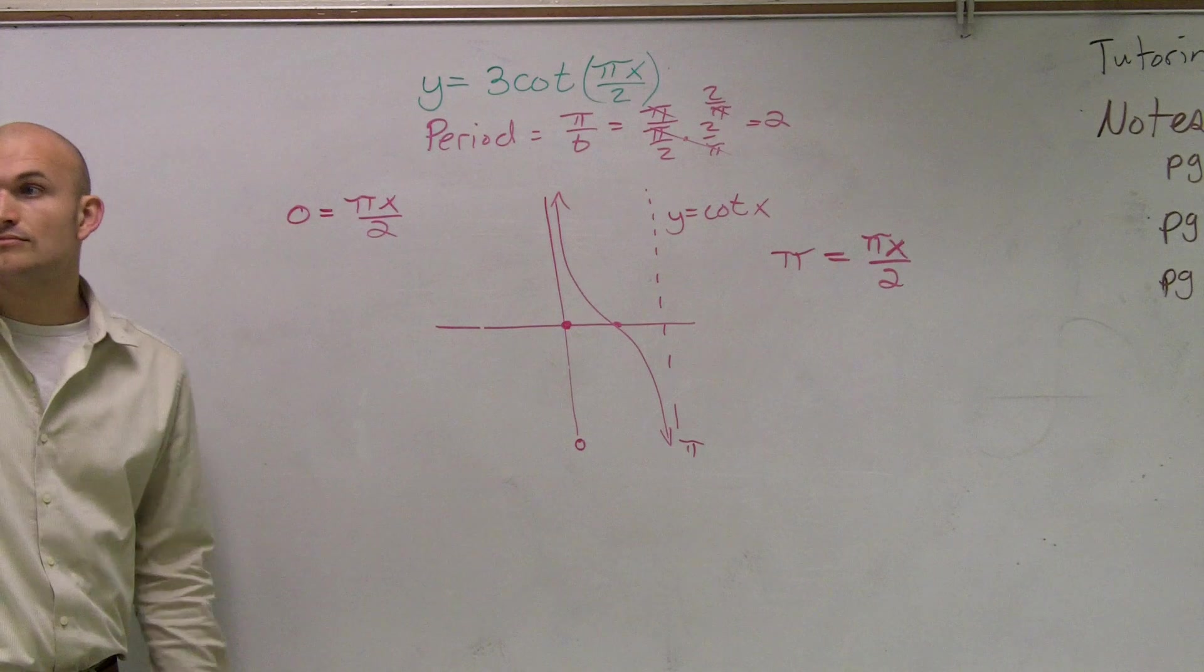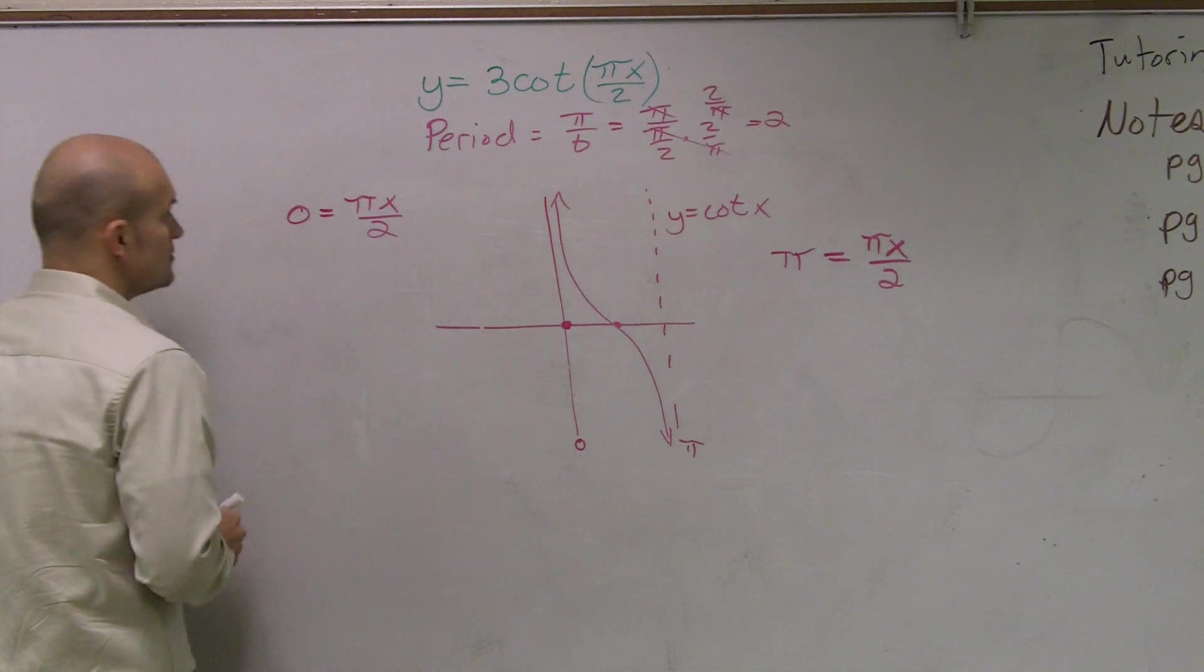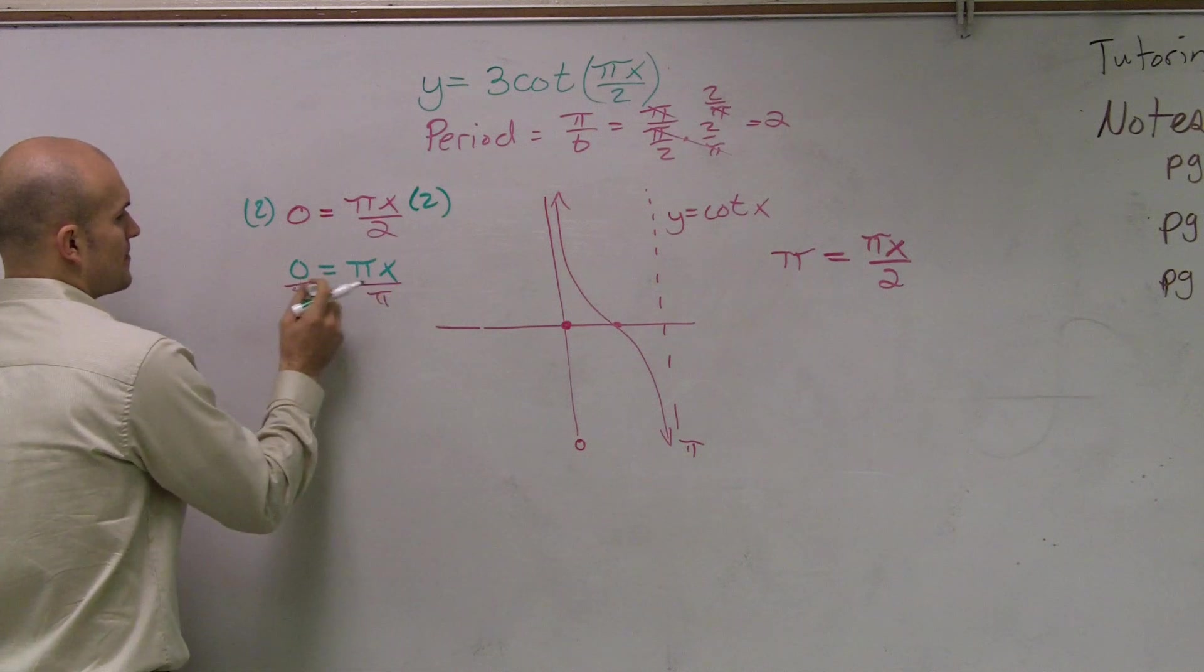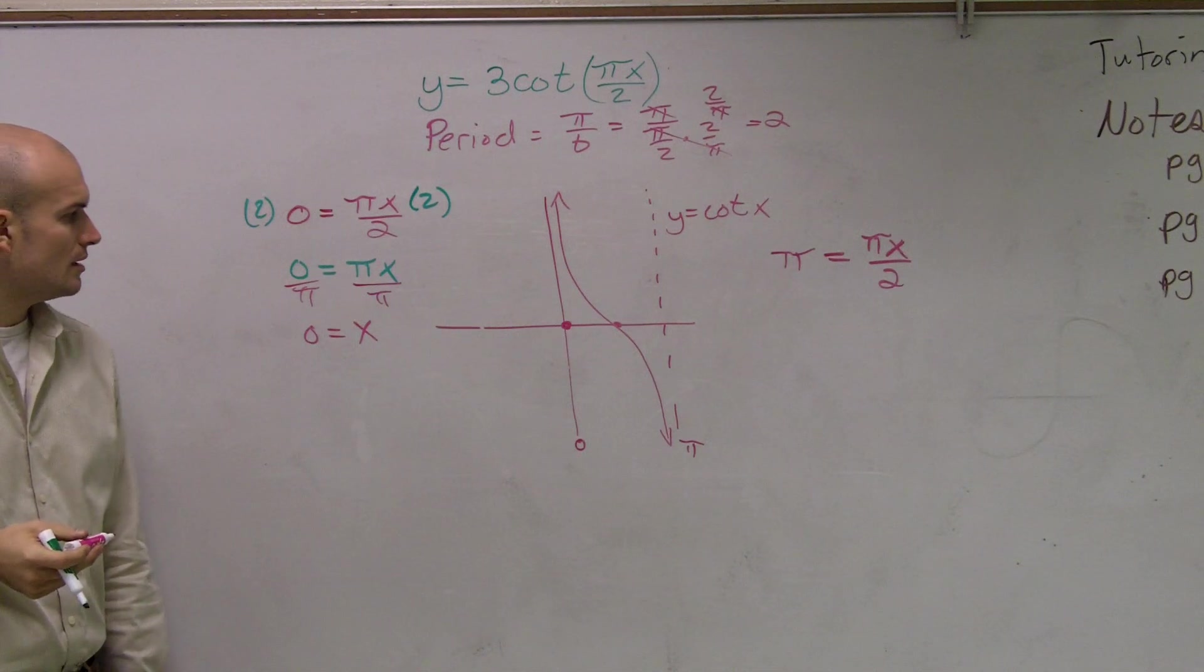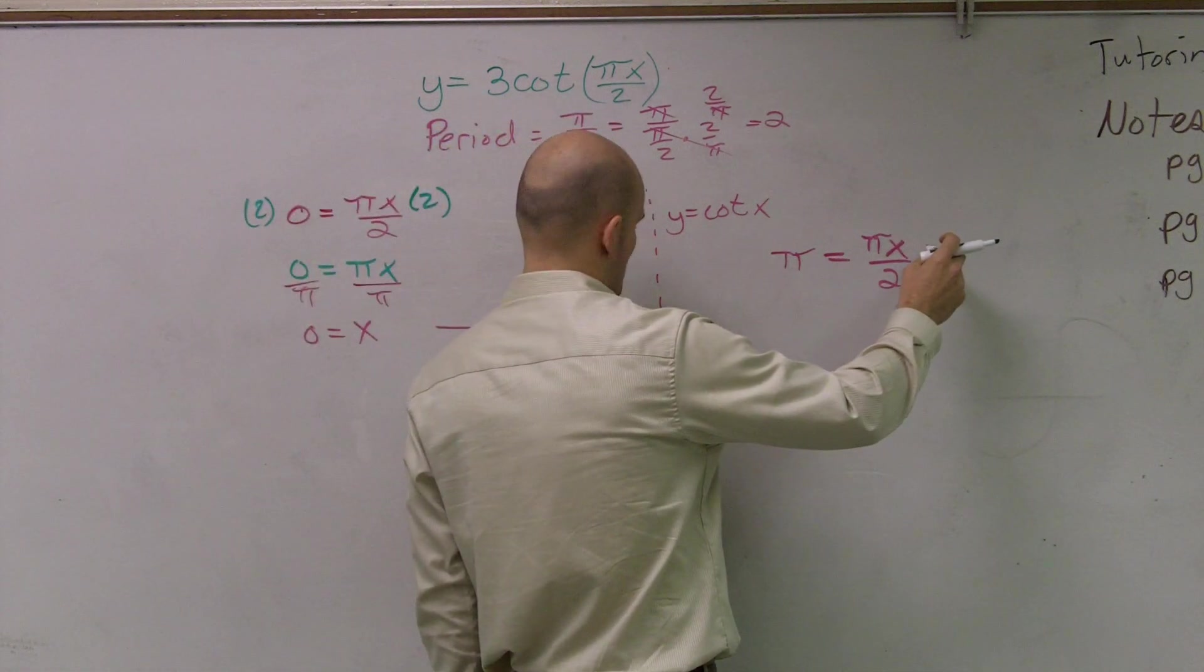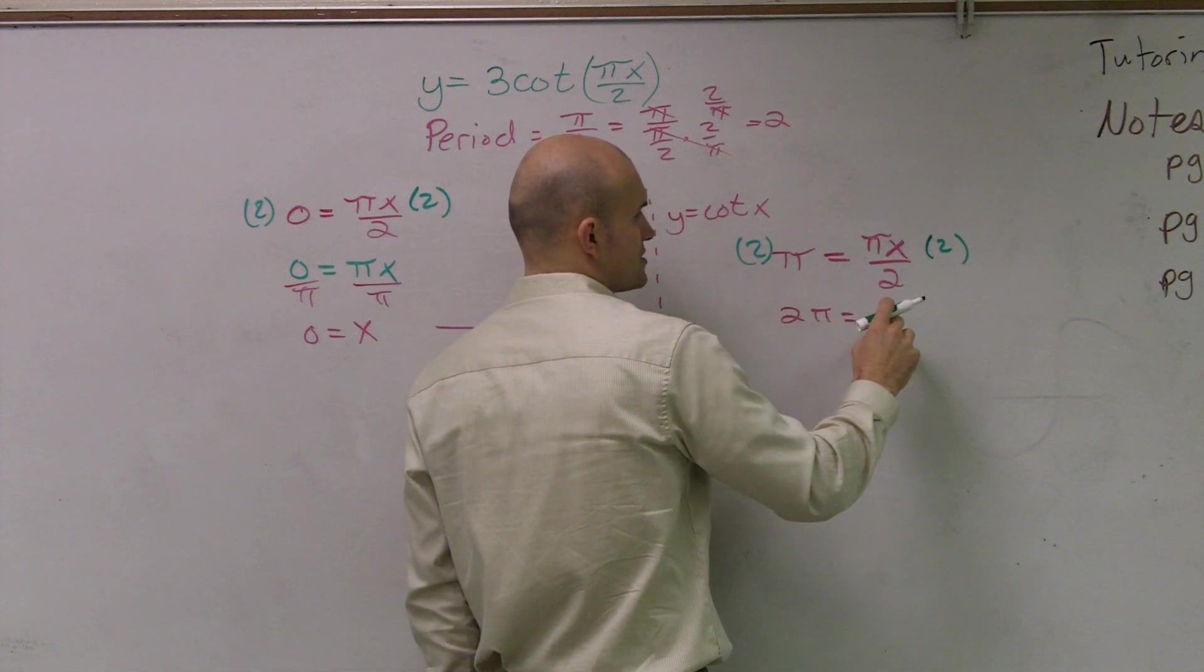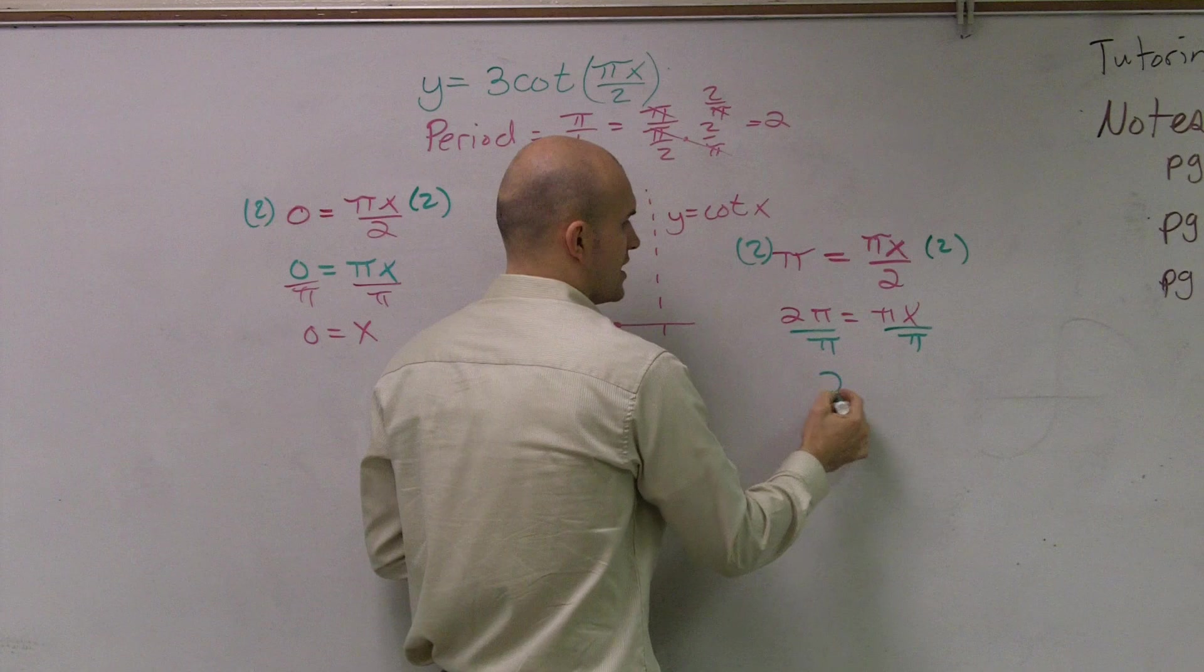Now what we do is solve for x. So multiply by 2 on both sides. 0 equals pi x. Divide by pi. Then for this one, I multiply by 2 on both sides. And then I divide by pi. So I have 2 pi equals pi x. Divide by pi, and all I have now is 2 equals x.